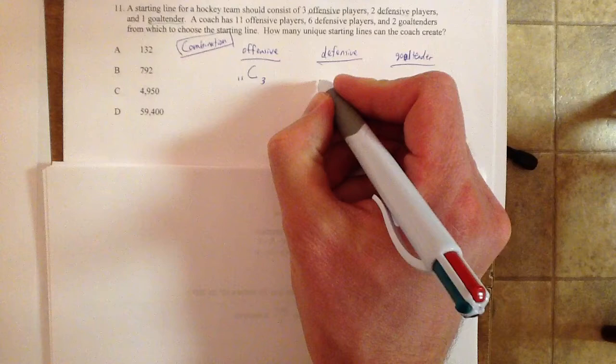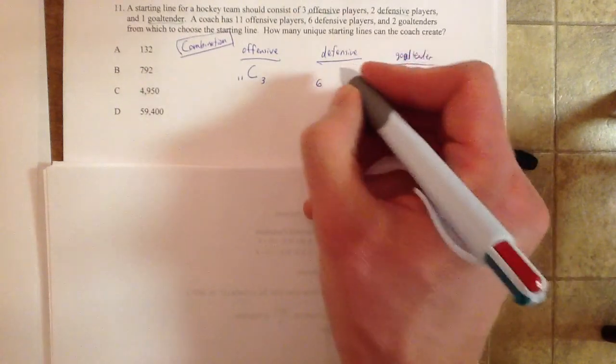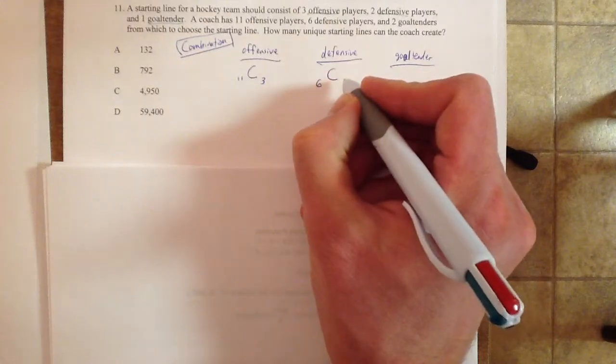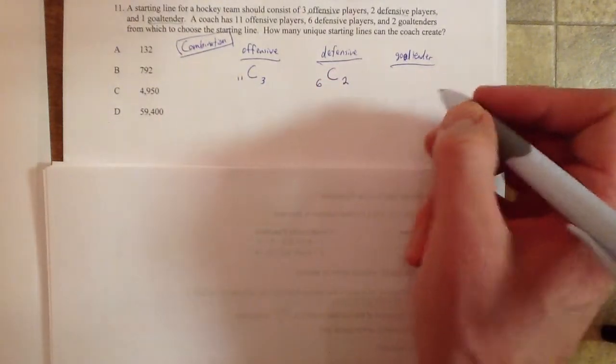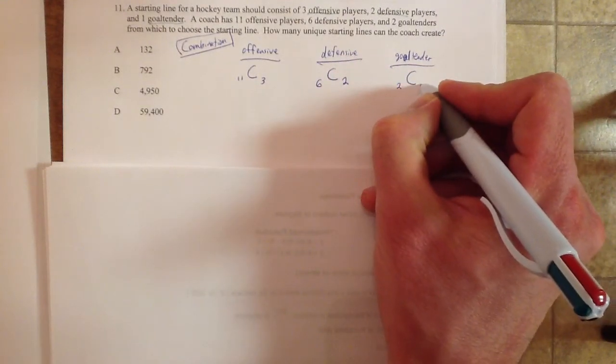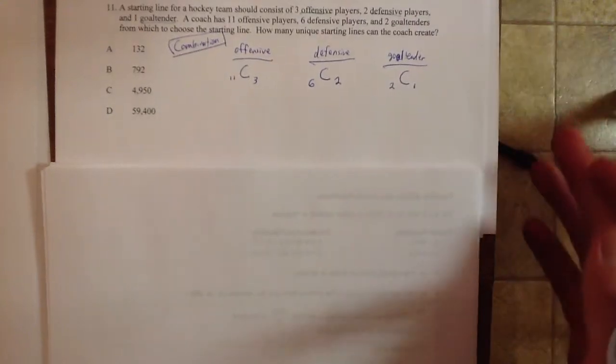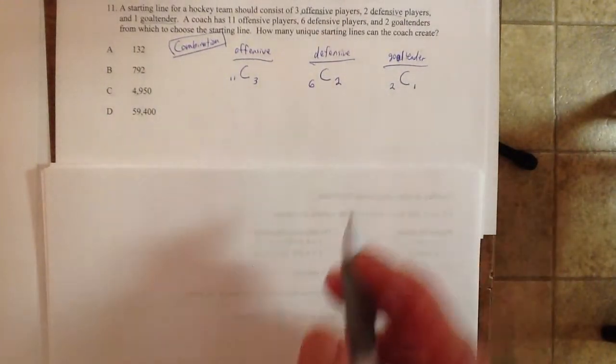Let's go to defensive. How many do we have to start with? I hope you said six. How many do we need? Two. And the order doesn't matter. We have two goaltenders and we want one of them. Knowing that we only want one of them, we'll just put a one right there. We're going to figure those things out.